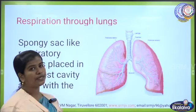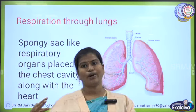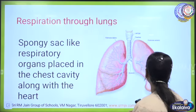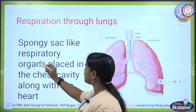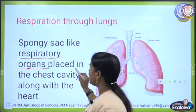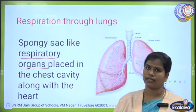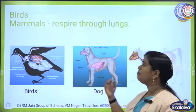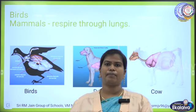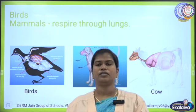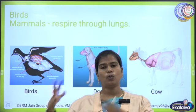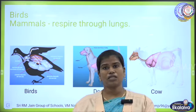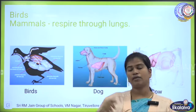Now we will switch to respiration through lungs. The lung is a spongy, sac-like respiratory organ placed in the chest cavity along with the heart. Most mammals — including dogs, cows, and human beings — as well as birds, use lungs for their respiration.